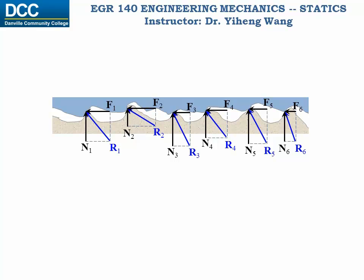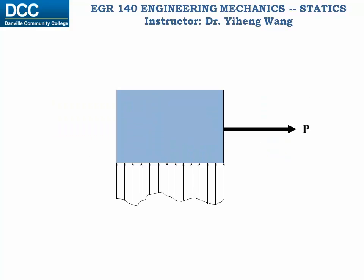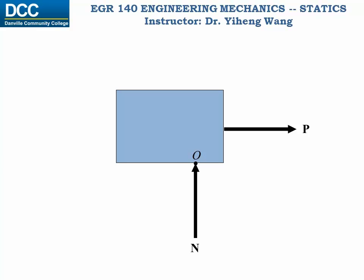Let's first focus on the vertical component forces N1, N2, N3, etc. Although we know the directions of these forces, we still don't know the magnitudes. But this can be considered as a distributed load, with a load intensity function still unknown. We can still find a concentrated load to replace this distributed load, and let's call it N, which in magnitude equals the integration of the load intensity function, placed at a certain location, point O. Similarly, we can summarize all the horizontal component forces and replace them with a concentrated force F. We don't know exactly where to position F, but that's less important.